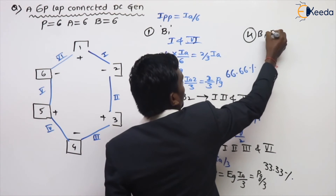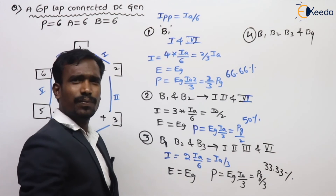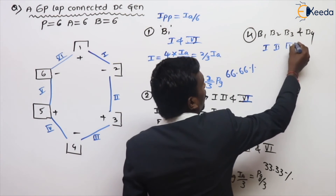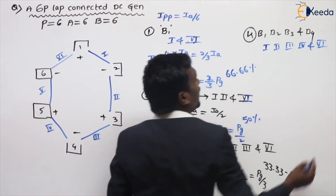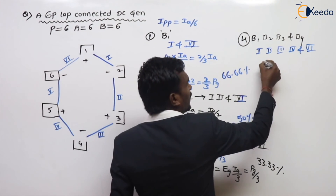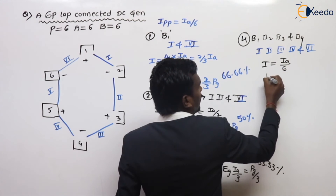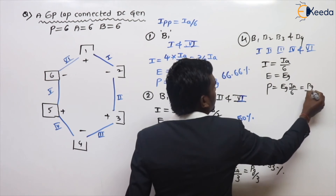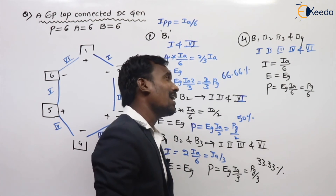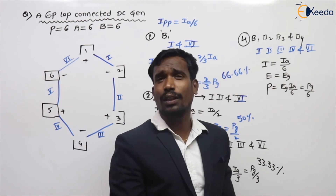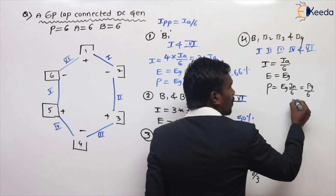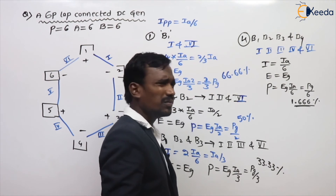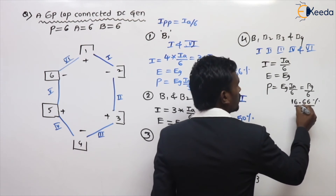Fourth case for six-pole: brush 1, brush 2, brush 3, and brush 4 all damaged. With brush 4 also damaged, parallel paths 1, 2, 3, 4, and 6 are open-circuited — five parallel paths open. Only one parallel path remains, carrying Ia by 6. Power equals EG times Ia by 6, which is PG by 6 — only 16.67% of power develops.